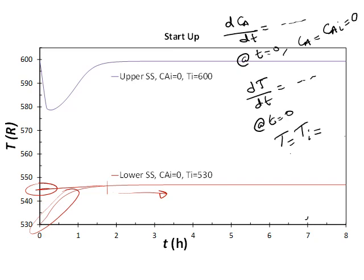For the upper steady-state, the solvent was heated up to 600 Rankine and then I start my process. At time 0 the temperature is 600 Rankine; however, my feed T0 is at 70 degrees Fahrenheit, which is around 530 Rankine. So you can see the temperature is dropping, because my feed is much colder than the reaction mixture. But with time, the rate of reaction picks up, the heat released from the reaction picks up, and therefore the temperature increases again until it reaches the steady-state around 600 Rankine.